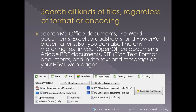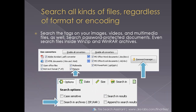Search all kinds of files, regardless of format or encoding. Of course you can search Microsoft Office documents like Word documents, Excel spreadsheets, and PowerPoint presentations. But you can also find any matching text in your OpenOffice documents, Adobe PDF documents, RTF rich text format documents, and in the text and meta tags on your HTML web pages. Search the tags on your images, videos, and multimedia files as well.